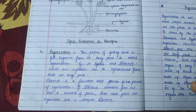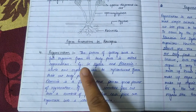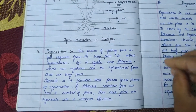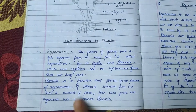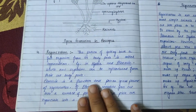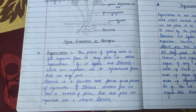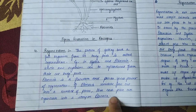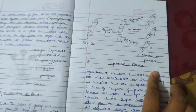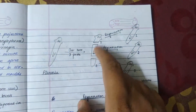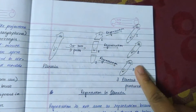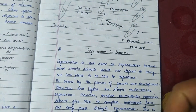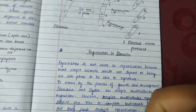The next method is regeneration. Regeneration is the process of getting back a full organism from its body parts. Examples are hydra and planaria. Planaria is a flatworm with a great power of regeneration — if planaria is cut into many pieces, every piece can regenerate into a complete planaria. However, regeneration is not the same as reproduction, because most simple animals do not depend on being cut into pieces to reproduce.